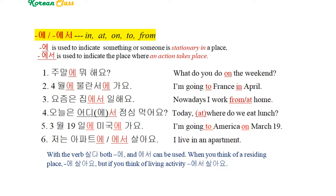Number 1: 주말에 뭐 해요? (What do you do on the weekend?) Number 2: 4월에 불란서에 가요. (I'm going to France in April.) Number 3: 요즘은 집에서 일해요. (These days I work from home.) Number 4: 오늘은 어디서 점심 먹어요? (Where are you having lunch today?)